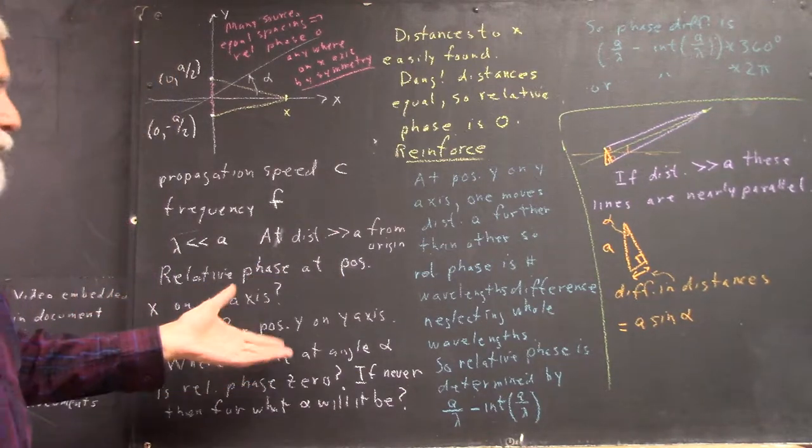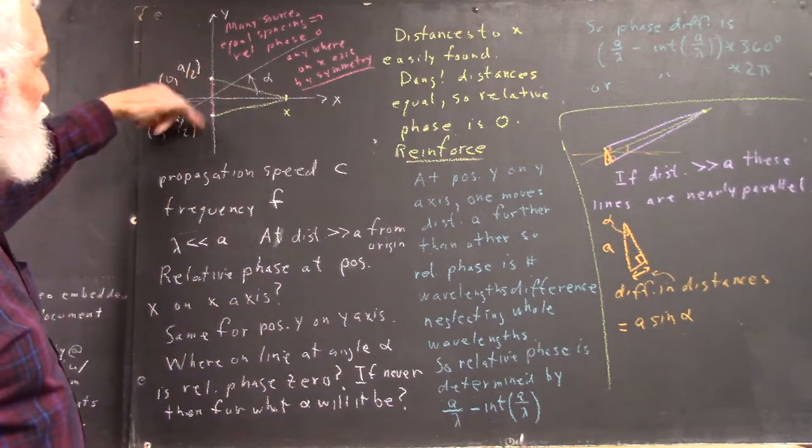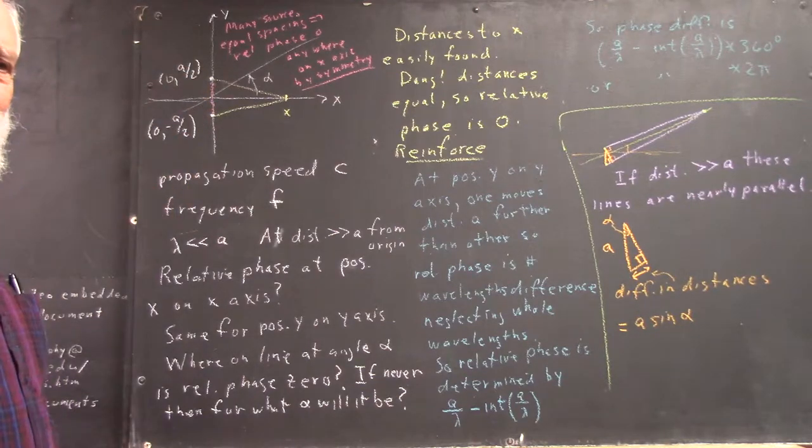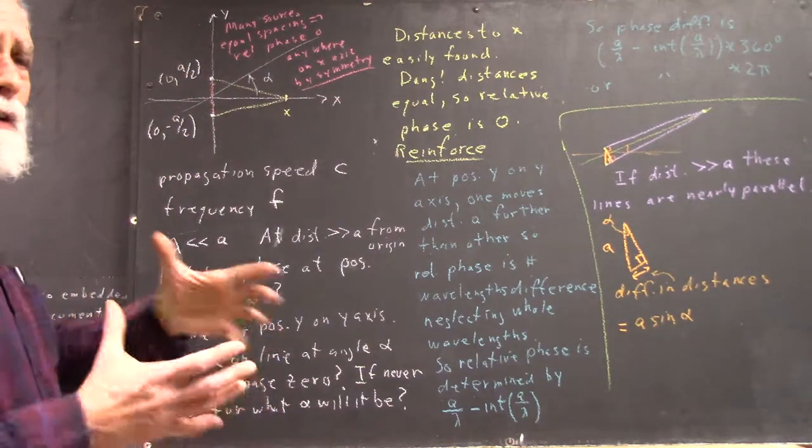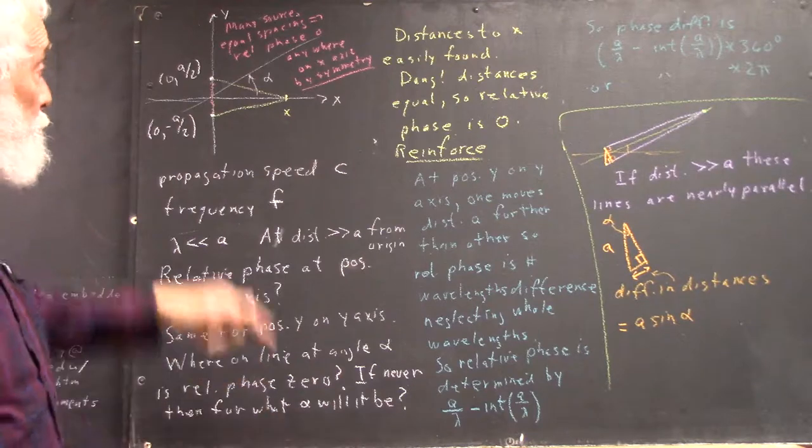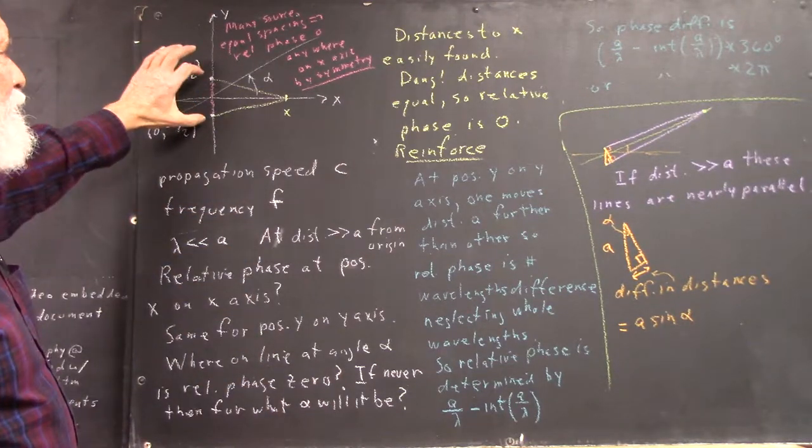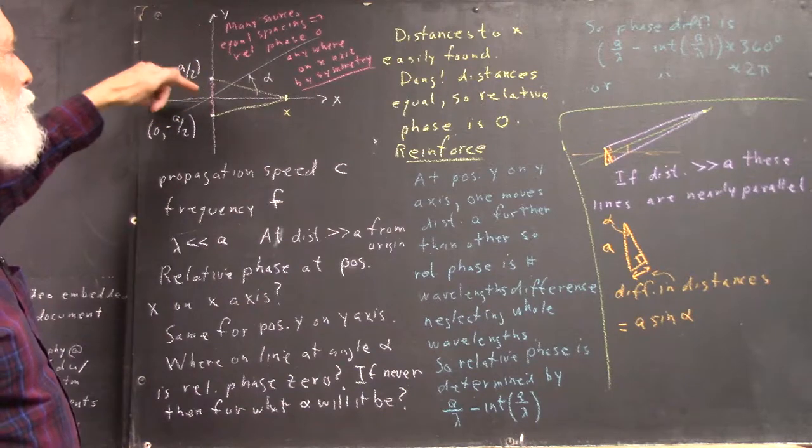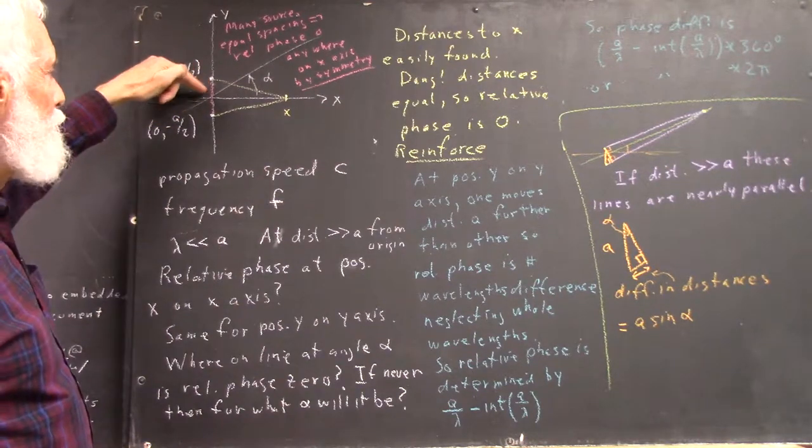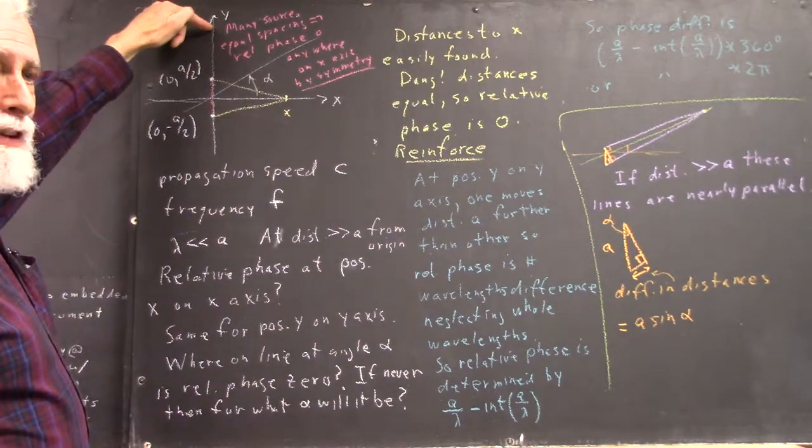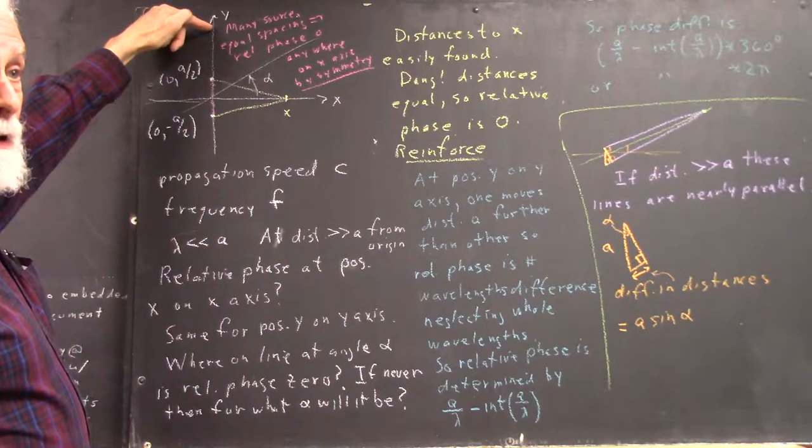What we can say is that there are so many of these that the phases are essentially random. The phase difference between one of these things and another at some distance is pretty random.